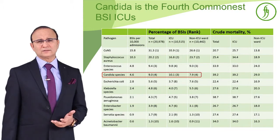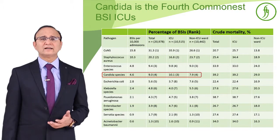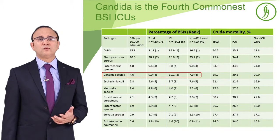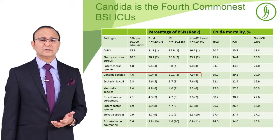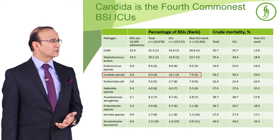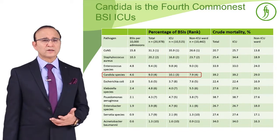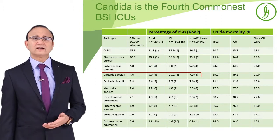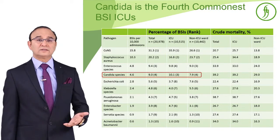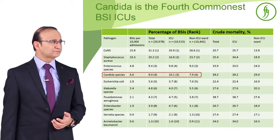Among the organisms identified, Candida was the fourth commonest organism to cause these infections, after coagulase-negative Staphylococcus, Staphylococcus aureus, and Enterococcus. Some researchers even consider it the third commonest rather than the fourth commonest organism.